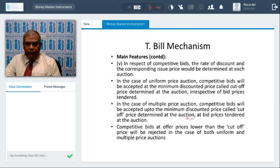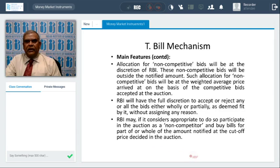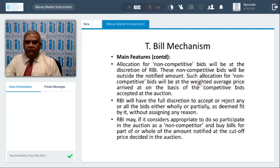Competitive bids should be accepted up to the minimum discounted price called the cutoff price, determined at the auction at the bid price tendered. Competitive bids at prices lower than the cutoff will be rejected in case of both uniform and multiple price auctions. Allocation of non-competitive bids is at the discretion of RBI. These non-competitive bids are outside the notified amount — 5% for T-bills outside the allotment amount — and allocation is at the weighted average price arrived at based on competitive bids accepted.